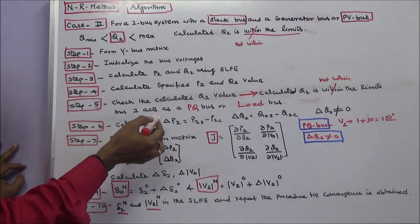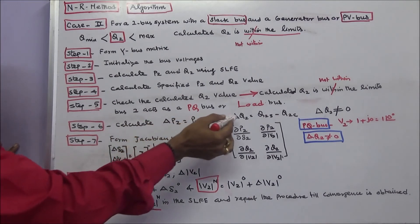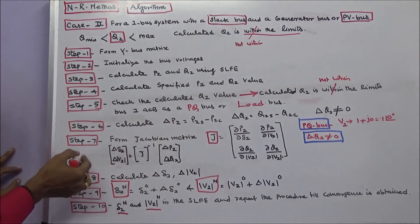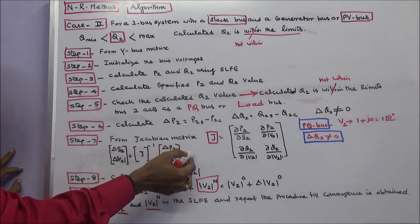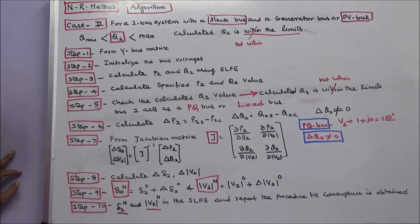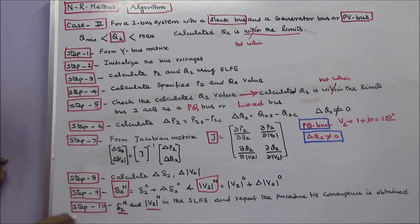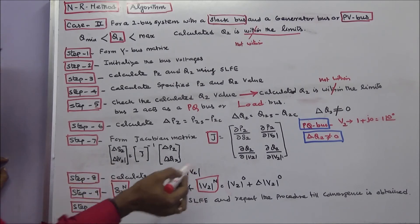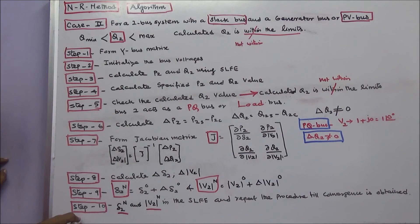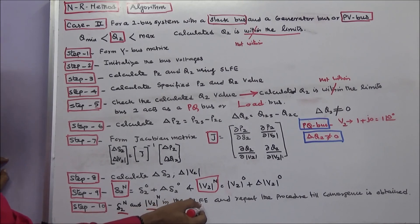Step 6: calculate the difference in P2 and the difference in Q2. Step 7: form the Jacobian matrix — you will get a 2×2 matrix. Step 8: calculate change in delta 2 and change in modulus of V2. Step 9: find the new delta 2 and the new modulus of V2. Step 10: apply the new delta 2 or new modulus of V2 in the static load flow equation, and repeat the procedure until convergence is obtained.